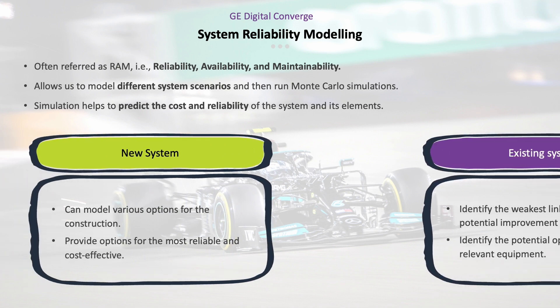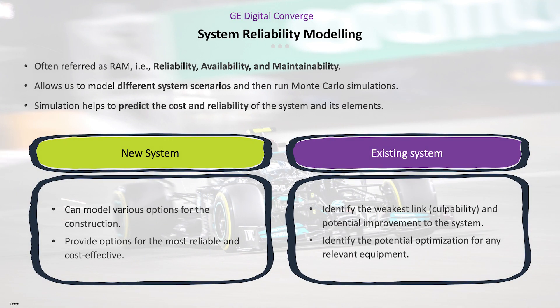This SRM analysis can be used for either new or existing systems. For a new system, we can model different construction options to know the potential cost and potential reliability of the system. For an existing system, we are able to identify the weakest links and the culpability of that system.